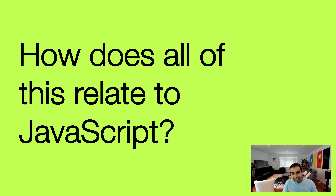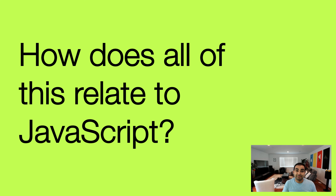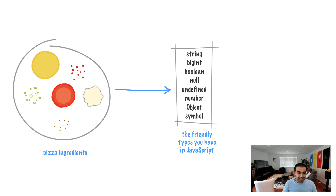Everything about the pizza analogy was there for a purpose. The description of simple and complex ingredients very neatly applies to how types in JavaScript actually work. Each individual ingredient could be considered a counterpart to a type that you can use. Just like our cheese, sauce, pepperoni, mushrooms, and bacon in our version of a pizza, the basic types in JavaScript are string, bigint, boolean, null, undefined, number, object, and symbol.